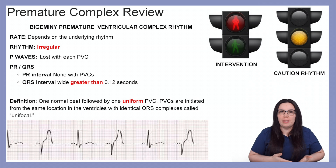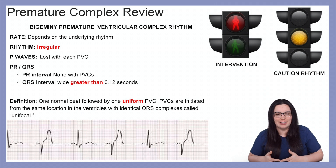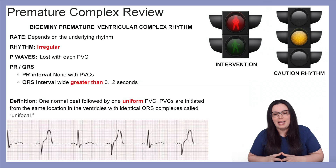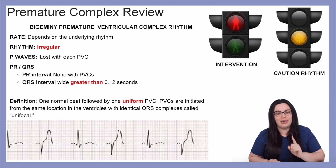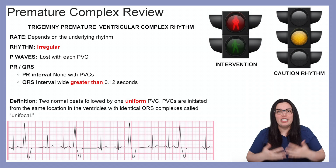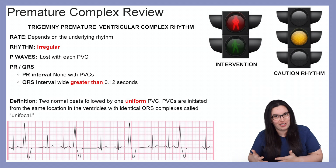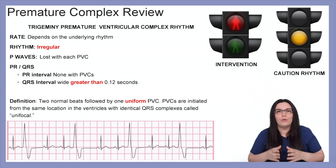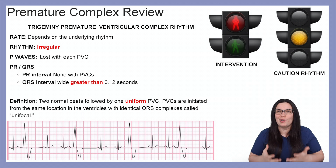Now we're going to look at bigeminy versus trigeminy premature ventricular complexes. The rate, rhythm, P waves, PR interval, and QRS intervals are all going to be the same. Bigeminy premature ventricular complexes are defined as one normal beat followed by one uniform PVC, with PVCs initiated from the same location of the ventricles with identical QRS complexes — called unifocal. Trigeminy premature ventricular complexes are defined as two normal beats followed by one uniform PVC, also unifocal, initiated from the same location with identical QRS complexes.